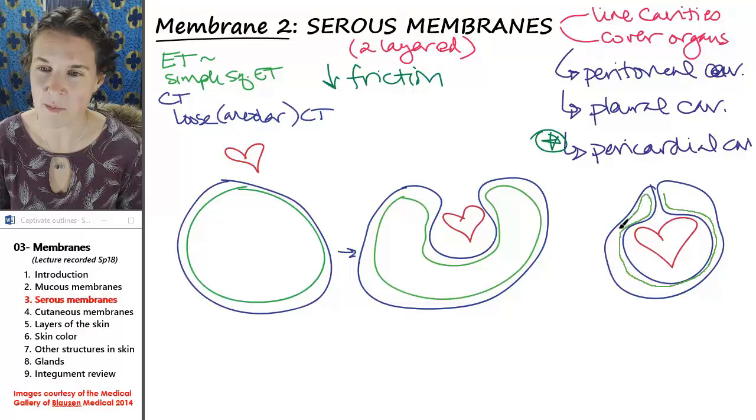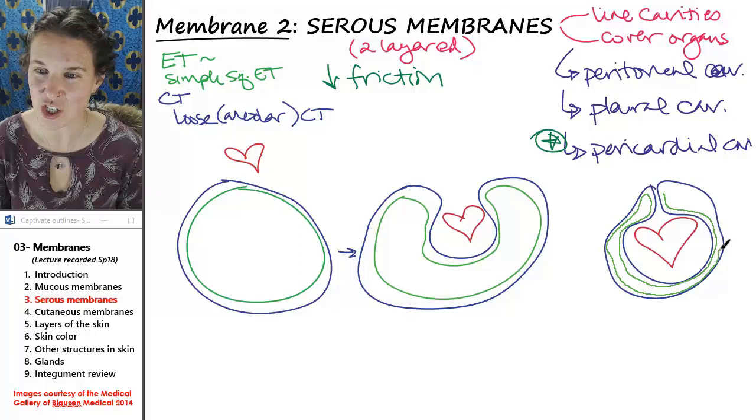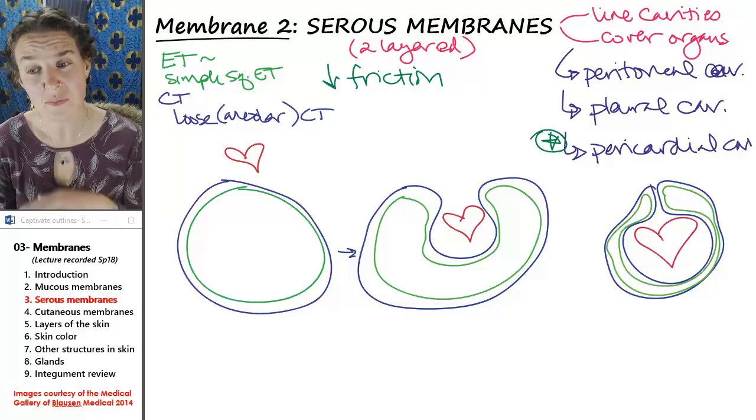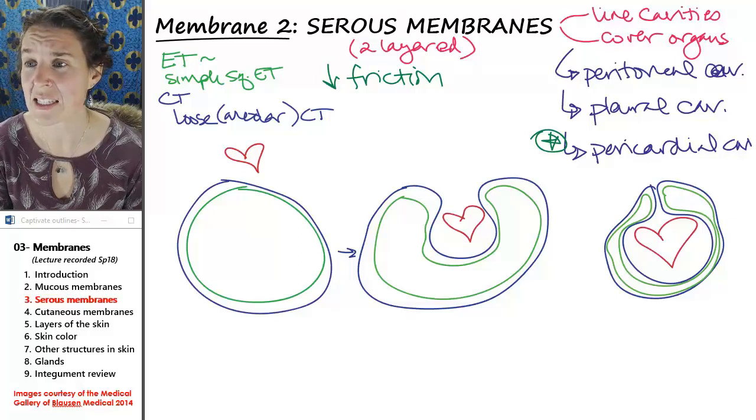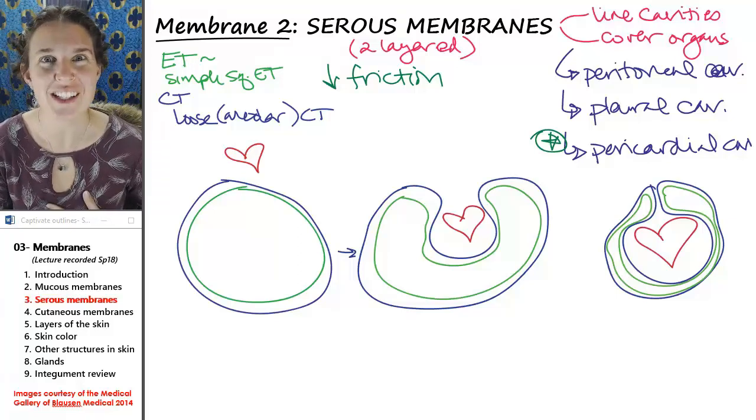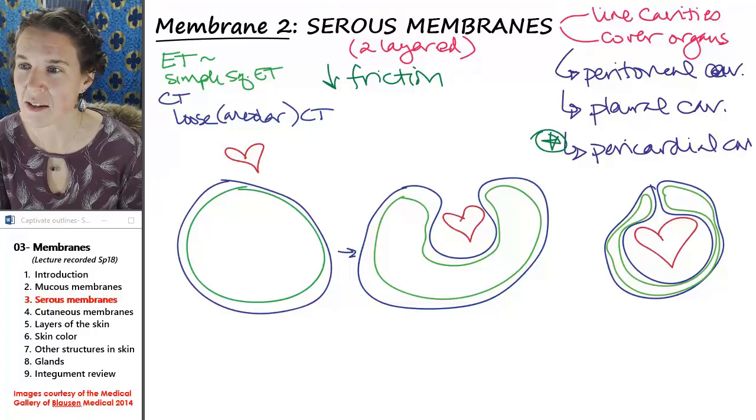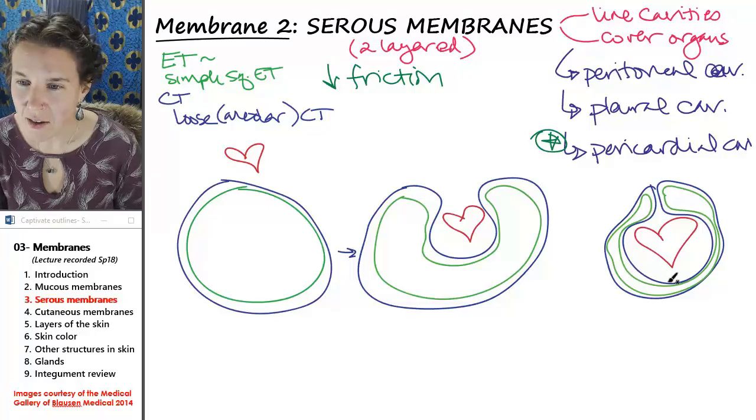Remember that I'm drawing a simple squamous epithelium in green that is attached to my blue areolar connective tissue by a basement membrane that I'm not drawing in here. What I've drawn is a serous membrane. Do you see how it has two layers?